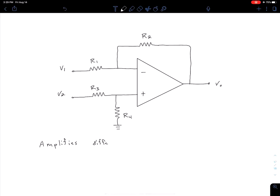So amplifies difference of V1 and V2 while blocking, ideally, any signals common to V1 and V2. We'll see what that means more clearly in a later video, and we're also going to see how we can quantify essentially how ideal our difference amplifier is.